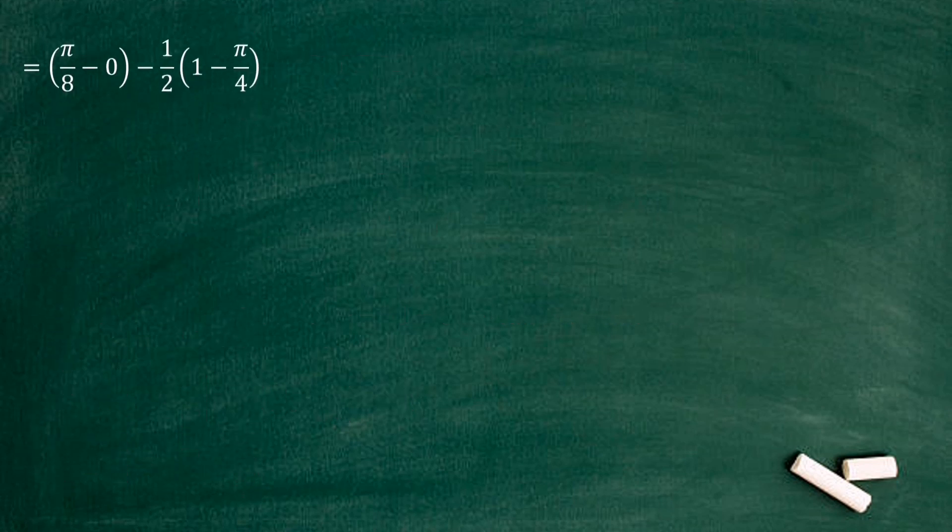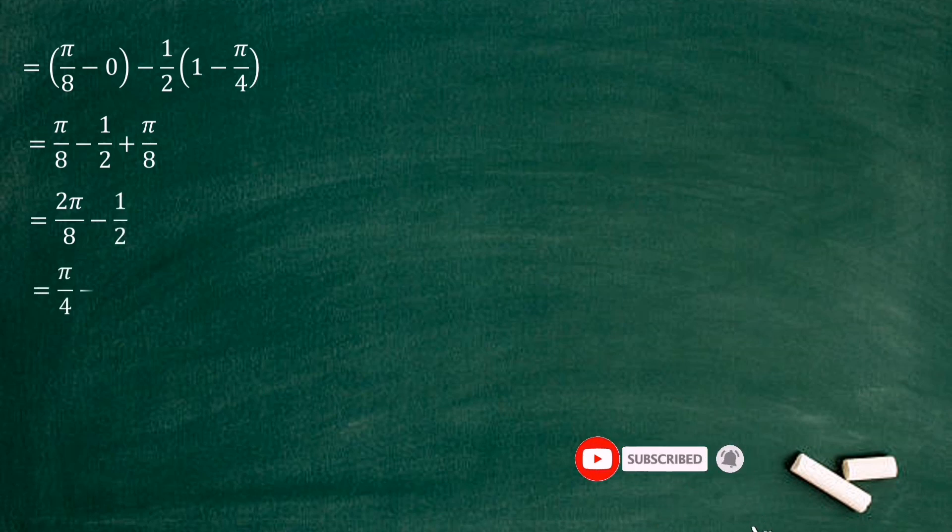Now we can remove the brackets and get the result pi over 8 minus half plus pi over 8. Pi over 8 plus pi over 8 value equals 2 pi over 8. Then we have the final answer as pi over 4 minus half.